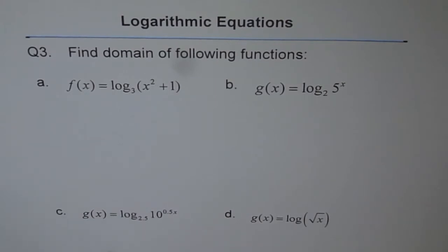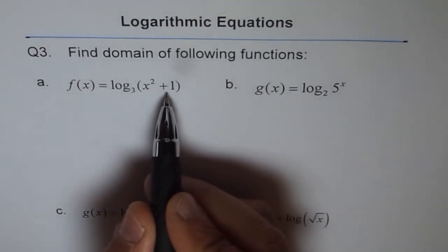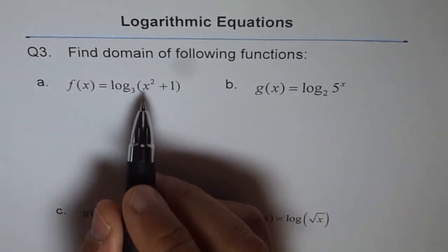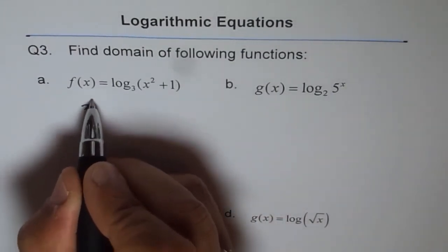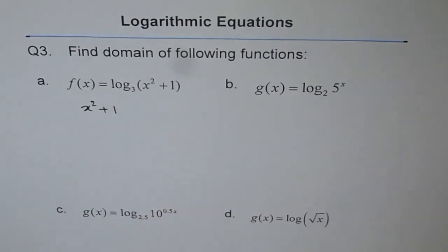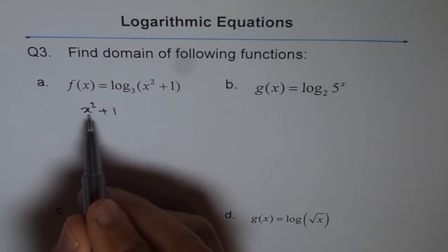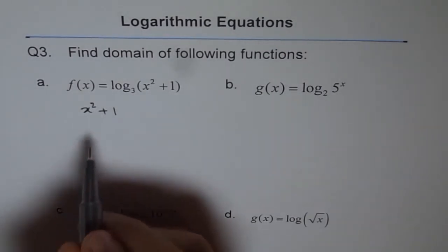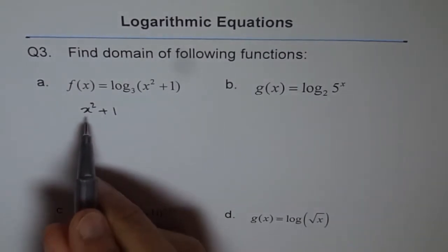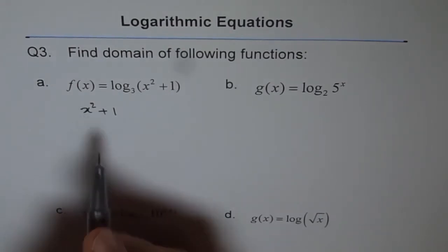So let's start with part a. Now as you have learned, the argument for the log should always be positive. So here it is x² + 1. Now x² + 1 I think is always positive. x² is a positive number, and 1 is also positive. So it is always positive irrespective of any value of x.